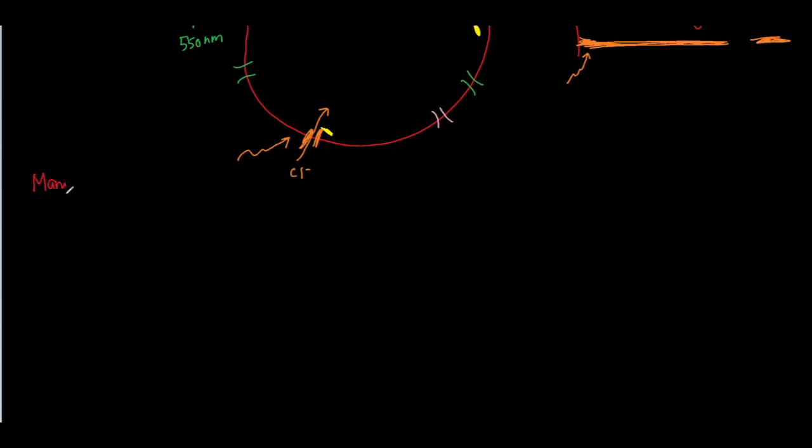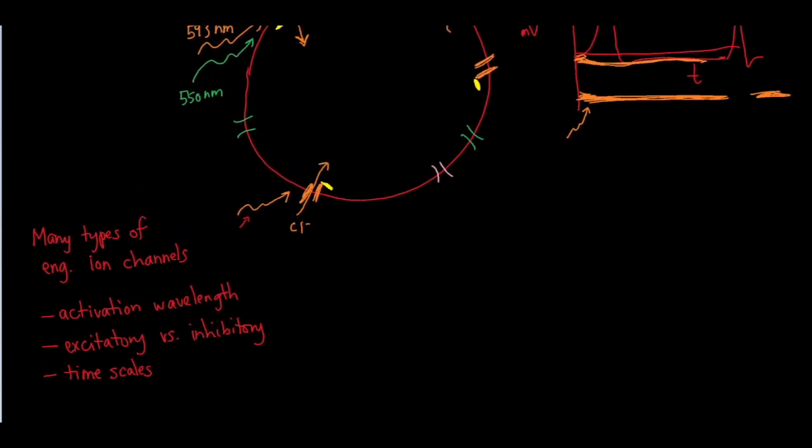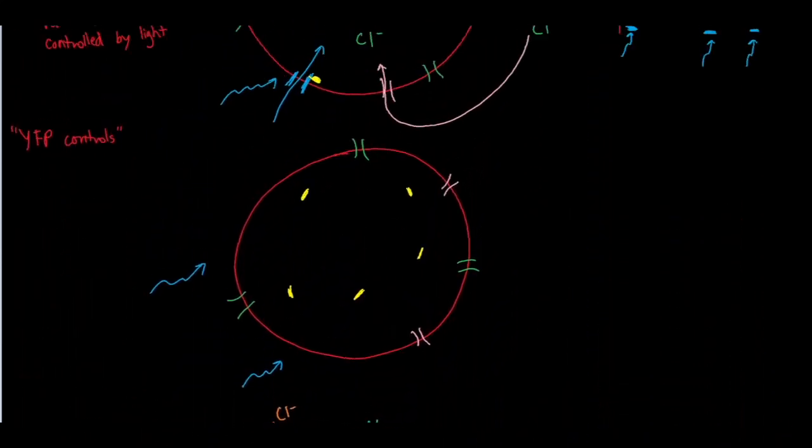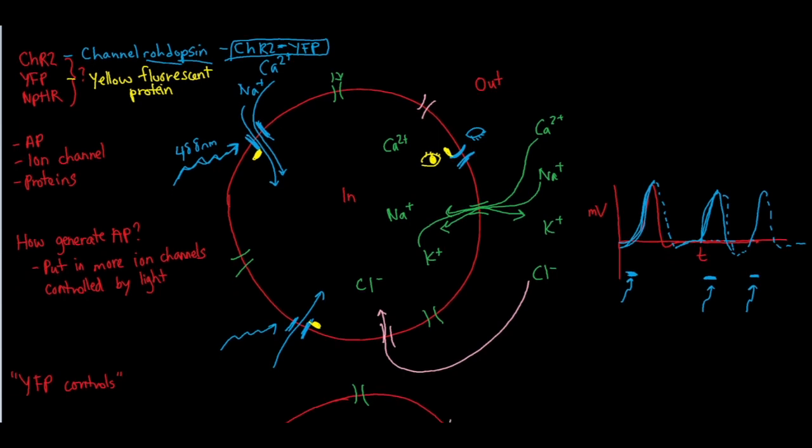So something I want to add is that there are many types of engineered ion channels. And they can vary by activation wavelength. That is basically what color activates that ion channel. So it can range from blue to orange to green to red, and it can also be excitatory versus inhibitory. And it can have different timescales. Some of them respond faster, some of them are slower, some of them are more precise. So those are some things to consider when you're designing your experiment. NPHR and CHR2 are simply two examples of the wide variety of toolbox that we have available for us.